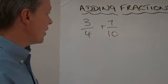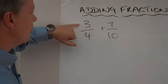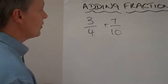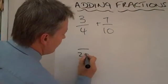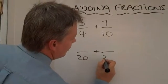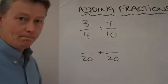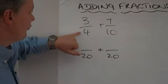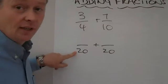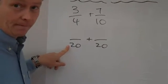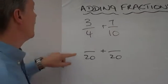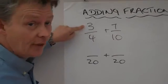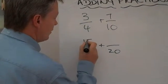So what we do, as we said before, is whatever we do to the top, we have to do to the bottom. What I'm going to do is I'm going to rewrite this, and I'm going to make it so that both numbers are over the number 20. So, what am I going to do to 4 to get to 20? I multiply it by 5. So if I multiply 4 by 5 to get to 20, I'm going to multiply 3 by 5, and 3 by 5 is 15.